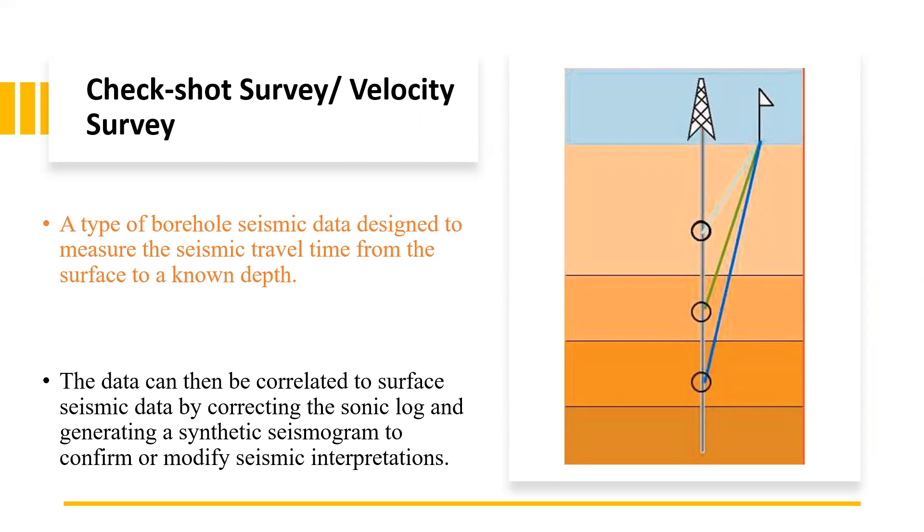We can see in the figure on the right hand side the standard CheckShot configuration. The seismic source is on the surface while geophones have been placed in the wellbore. Seismic signals, only direct arrivals, are recorded at receiver points. So it means we consider only first arrival in CheckShot survey. We can see the source and receivers have been placed here in the wellbore, and direct arrivals are being recorded.